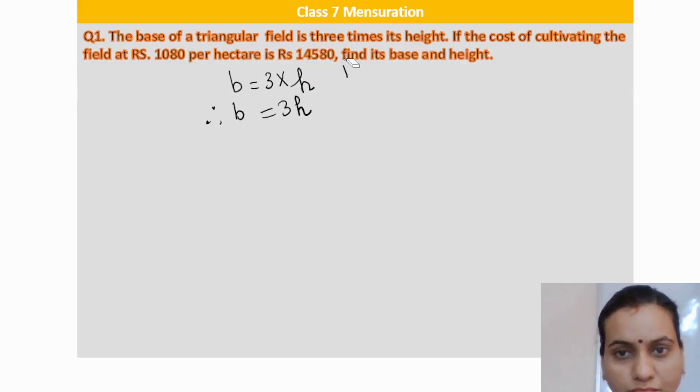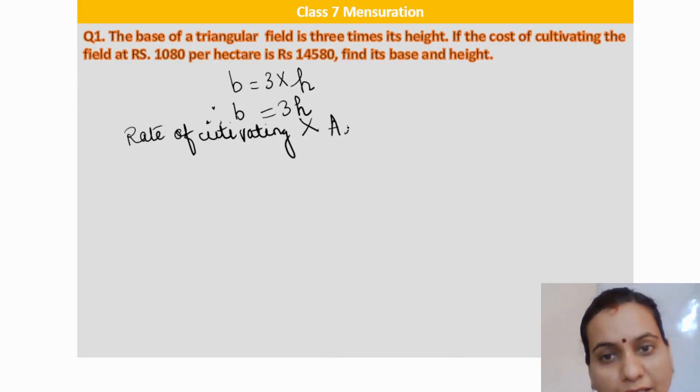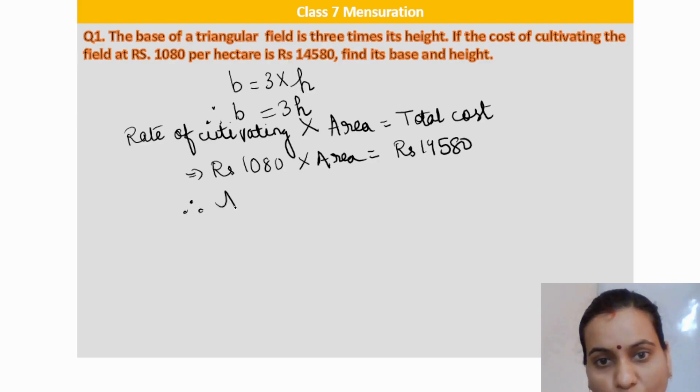Rate of cultivating the field into area of the field is equal to total cost of cultivating. So rupees 1080 into area is equal to rupees 14,580. Therefore, area will be equal to 14,580 divided by 1080.